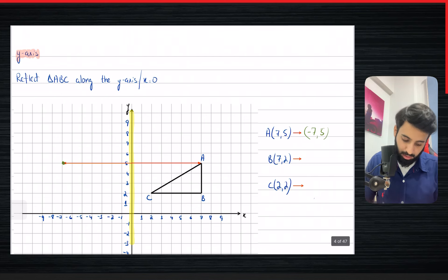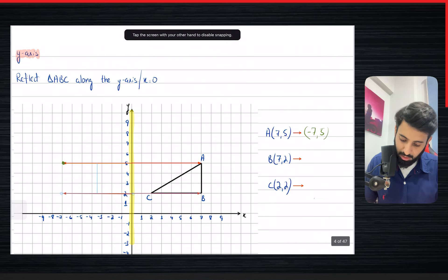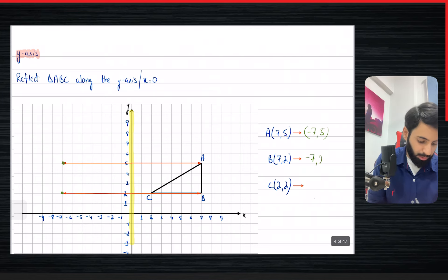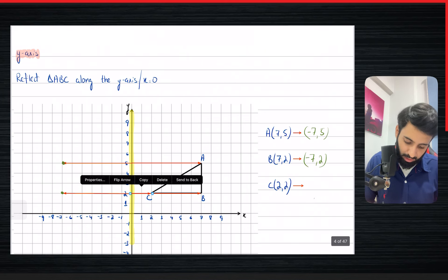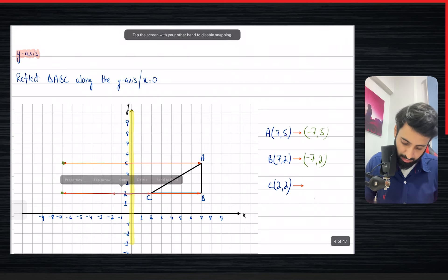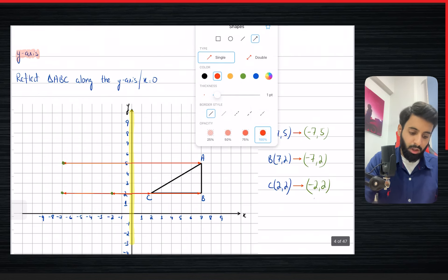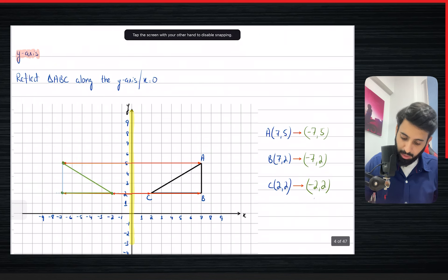Point B is also seven units towards the right, so reflecting it means going seven units towards the left, giving us minus seven comma two. Point C is two units towards the right, so reflecting it gives us minus two comma two. Let's join them with straight lines — and while I do that, I want you to identify a pattern.